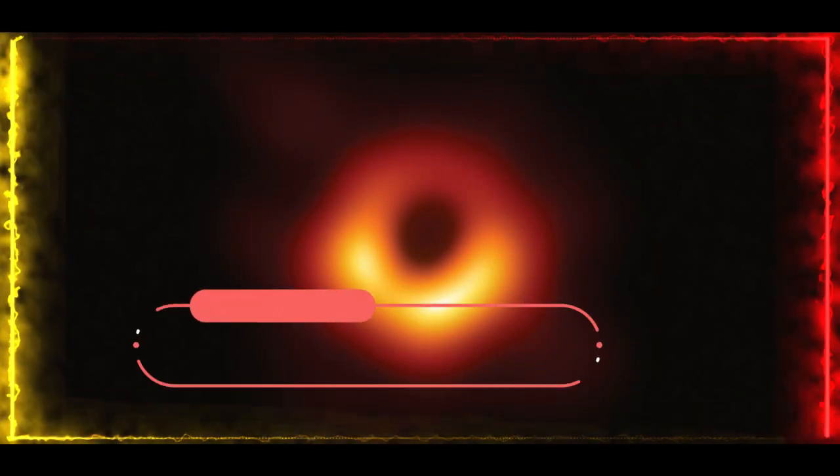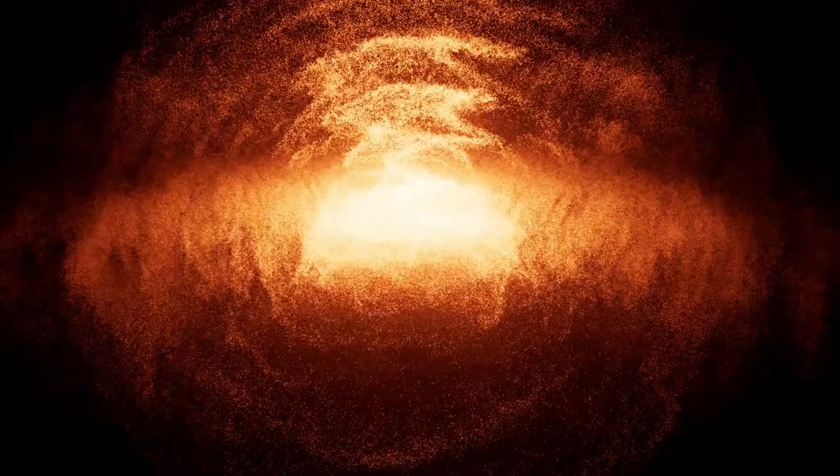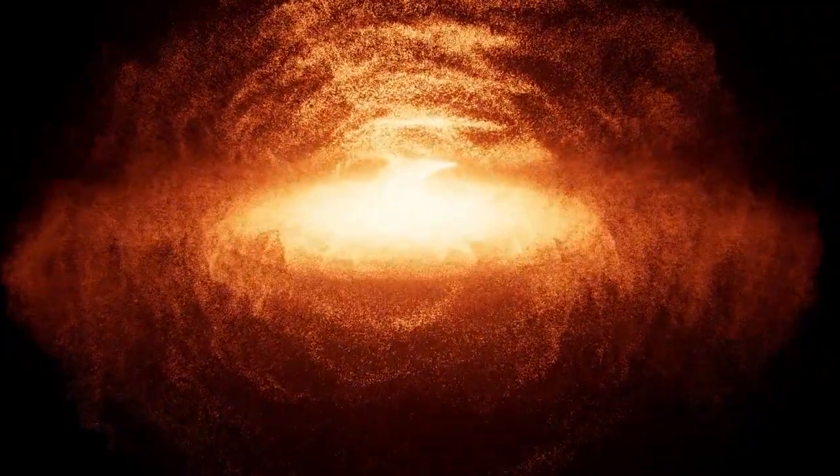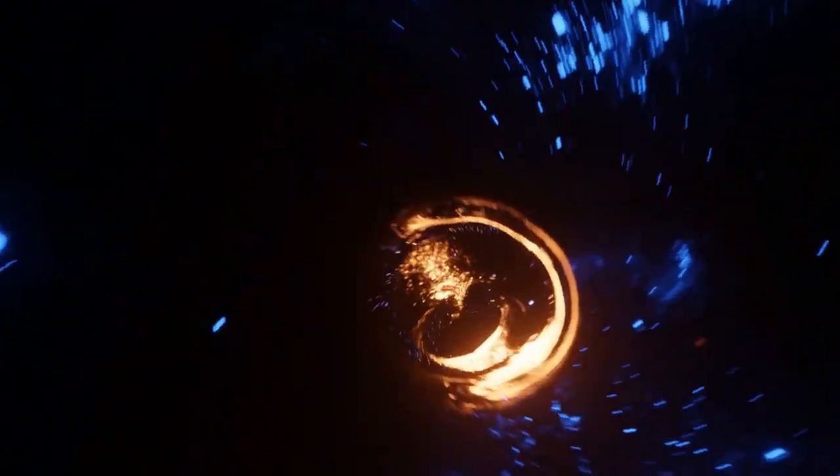Fact number 10, the first ever photograph of a black hole was taken in 2019. Scientists used eight telescopes from around the world to capture the image of the black hole in the center of the M87 galaxy, which is about 55 million light years away from Earth.